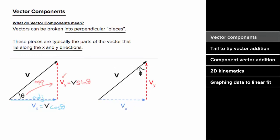And if instead we were given this angle and we wanted to determine the vertical component of the total vector, since this vertical component is now adjacent to this angle, we'd write the vertical component as the magnitude of the total vector times cosine of this angle. And since the horizontal component is now opposite to this angle, we'd write the horizontal component as the magnitude of the total vector times sine of this angle.